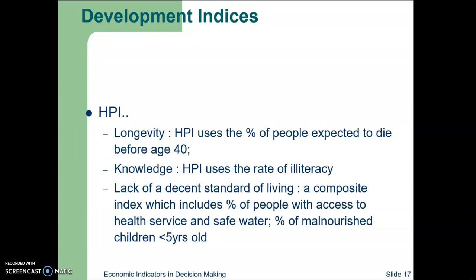The HPI takes into account longevity — specifically, the percentage of people expected to die before the age of 40. It also uses the adult illiteracy rate as its knowledge component, and a composite measure of lack of decent standard of living, which includes the percent of people with access to health services and safe drinking water, and the percent of malnourished children below five years of age.